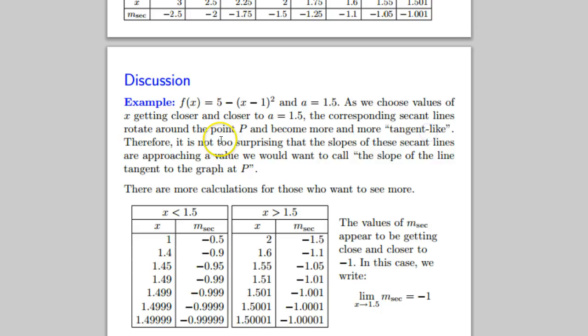Therefore, it's not too surprising that the slopes of these secant lines are approaching a value we would want to call the slope of the line tangent to the graph of P. Now, just remember, the tangent line problem doesn't actually solve for the tangent line slope. It's just solving for a line that approaches tangency.